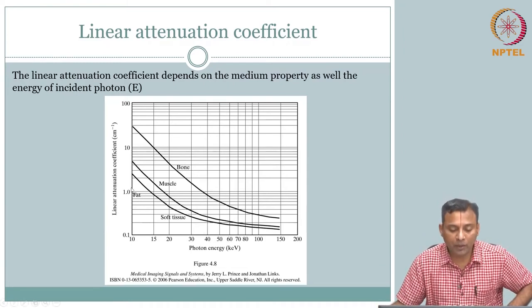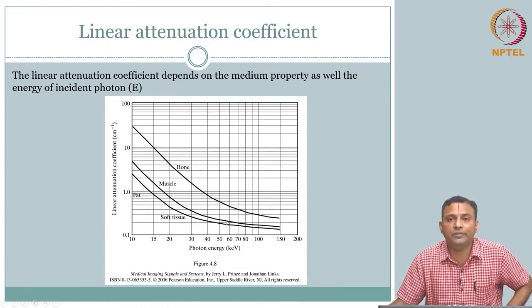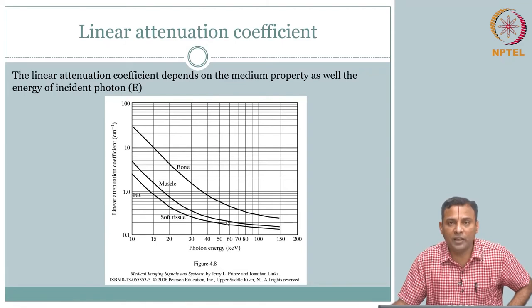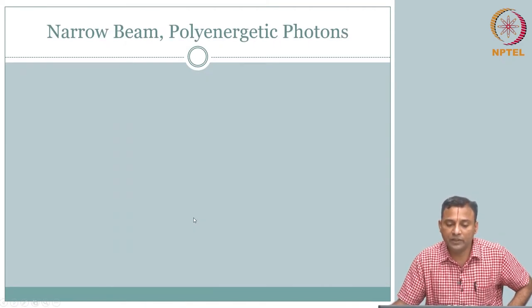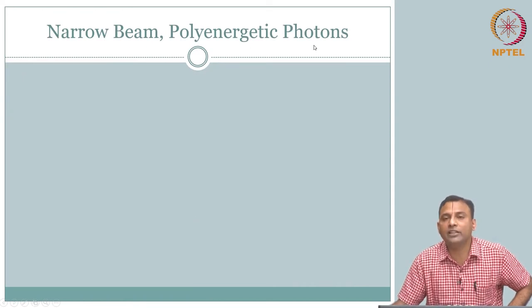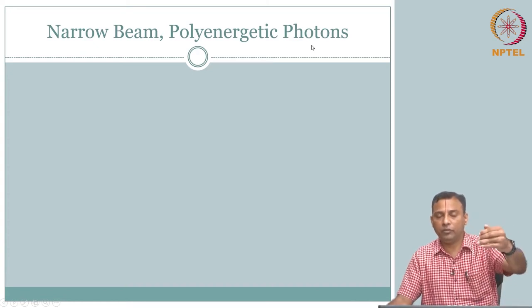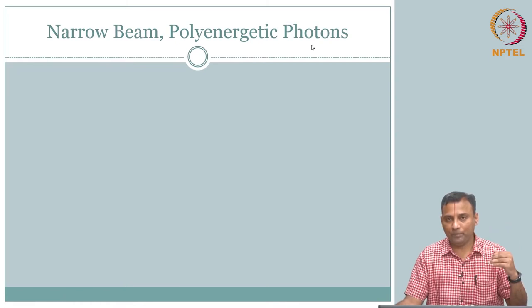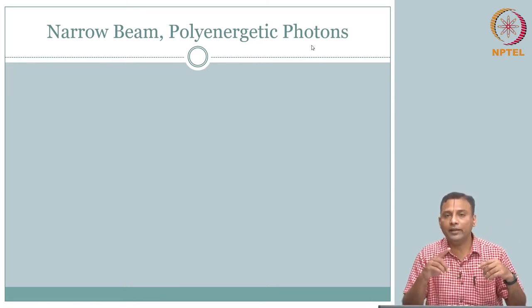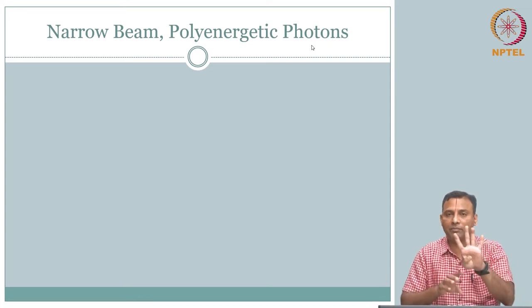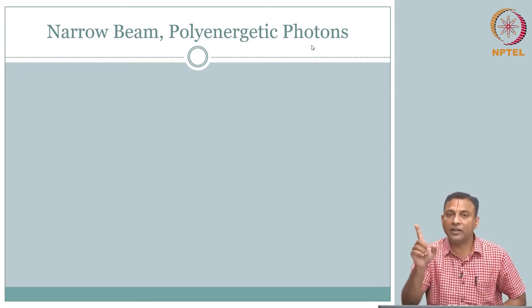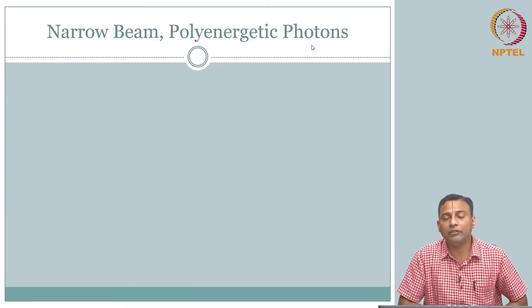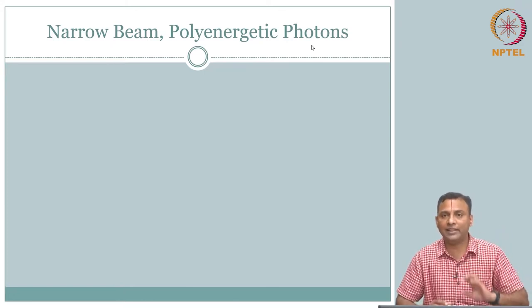Now what we will do is consider narrow beam poly-energetic photons — when the photons come in, what is the x-ray tube doing? Bremsstrahlung. So what are you getting? You are actually getting a spectrum, S of E — different numbers of photons each having different energy levels. That is what you are actually sending in. What we covered just now was mono-energetic, just N mu and done.